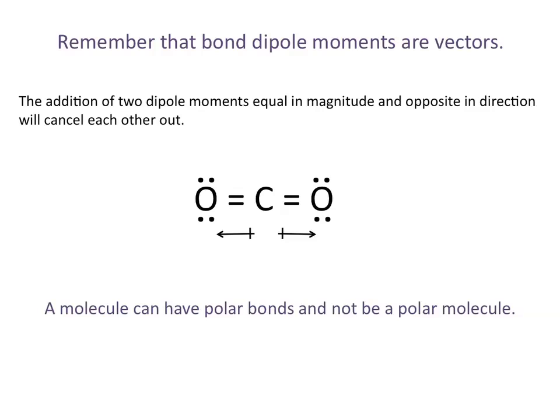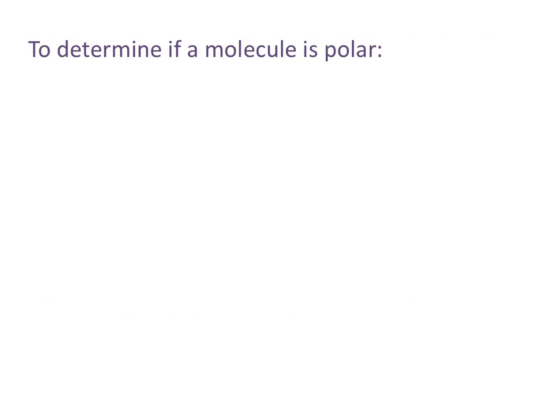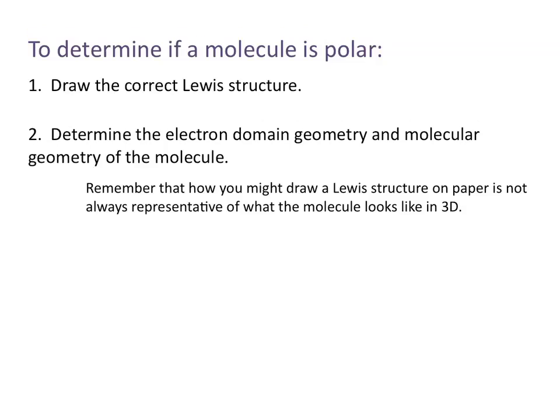A molecule can have polar bonds but not be a polar molecule. To determine if a molecule is polar, first you need to draw a correct Lewis structure. Then you need to determine the electron domain geometry and molecular geometry. It's important to remember that how you draw a Lewis structure on paper is not necessarily what the molecule looks like in three dimensions. Then you need to determine which bonds, if any, are polar.